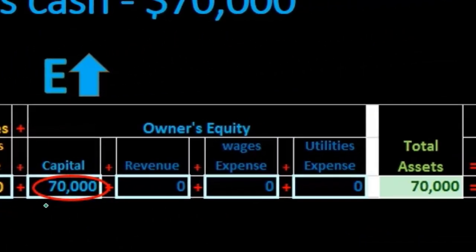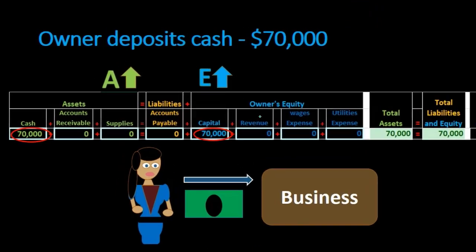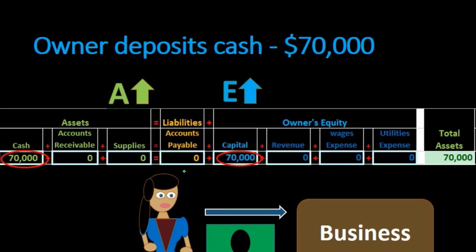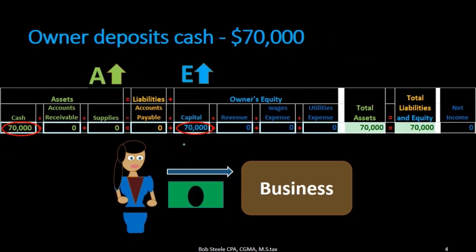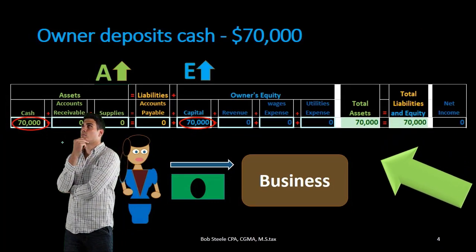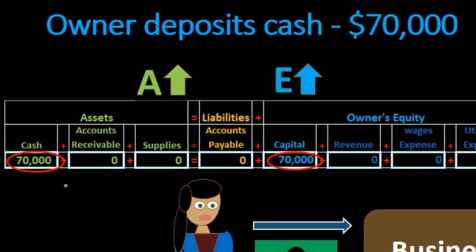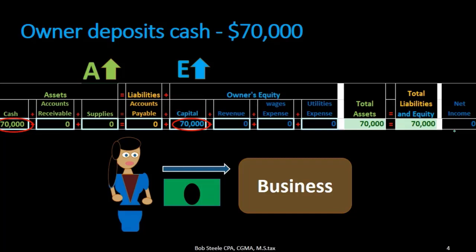We also want to double-check: does it make sense that capital would be going up? Capital represents what is owed to the owner — the company has assets of $70,000 and owes that either to a third party (a liability) or to the owner. In this case the owner put the money in the business. Total assets equal total liabilities plus equity, so the equation is in balance, with no effect on net income.